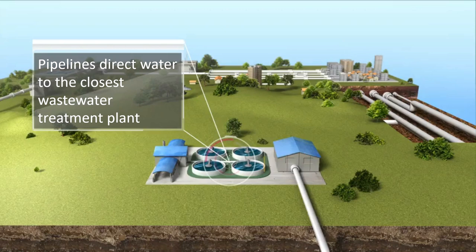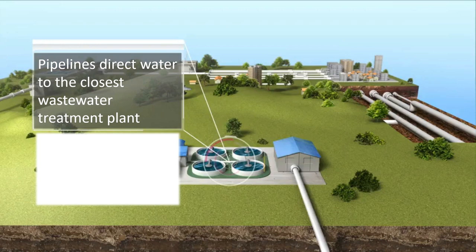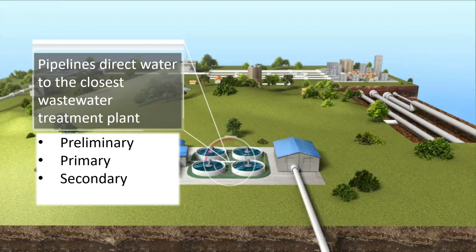Arrived at the wastewater treatment plant, sewage water undergoes preliminary, primary and secondary treatment steps for purification. In some cases, an advanced or tertiary treatment is also required.